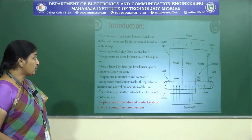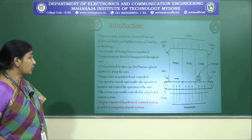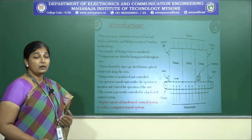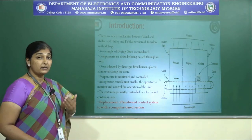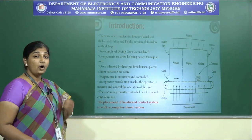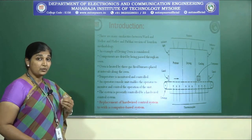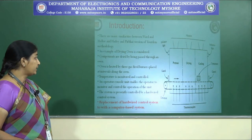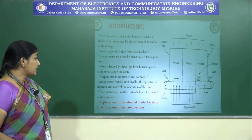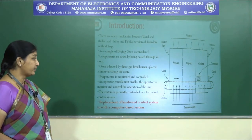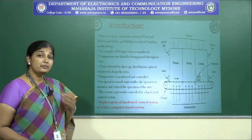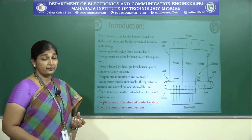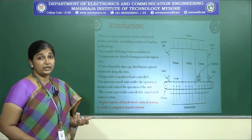An operator console unit enables the operator to monitor and control the operation of the units. There will be a display unit near the operator where he can visually see the temperature being maintained, the heating levels, the speed of the conveyor belt, and all important process control elements on a panel. The system is presently controlled by a hardwired control system — a simple mechanism monitored and maintained by a finite state machine.